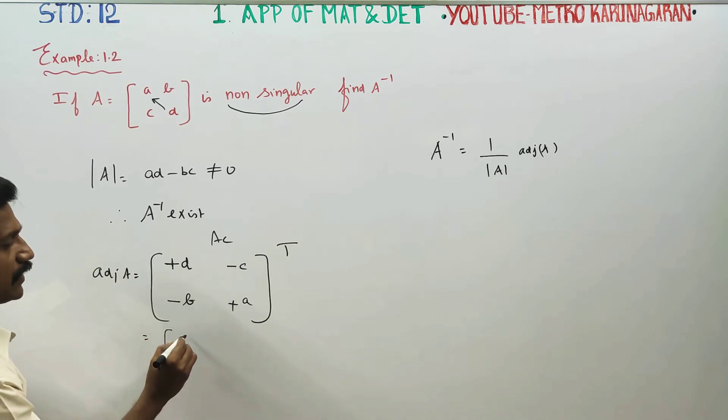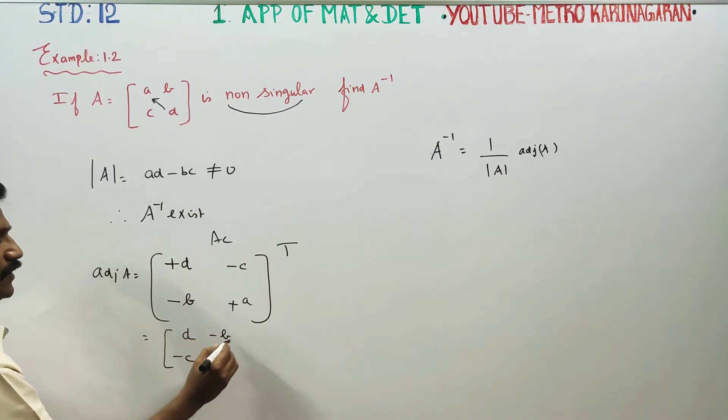D minus C minus B, that's transpose. D minus C, then minus B, A. It's called adjoint A.